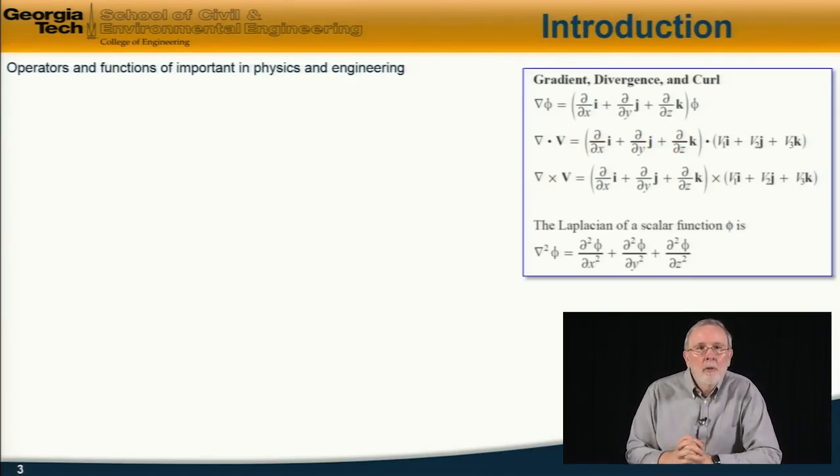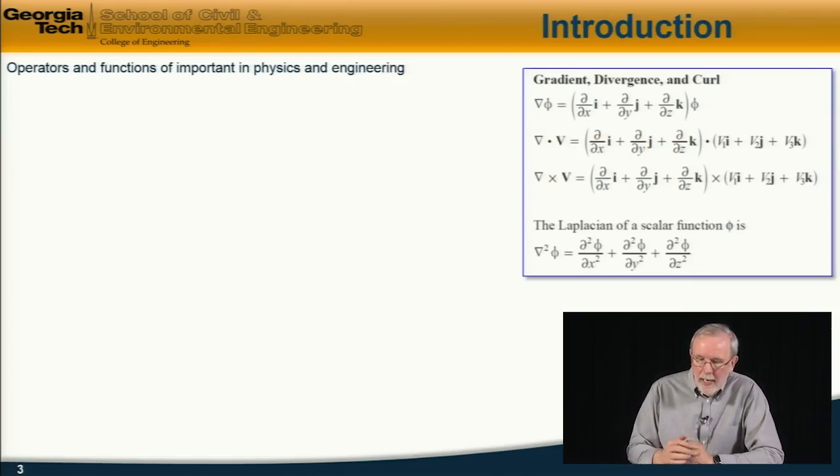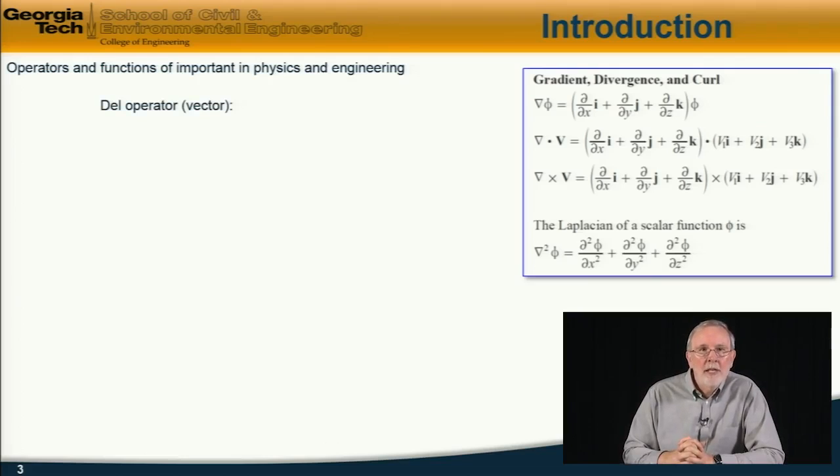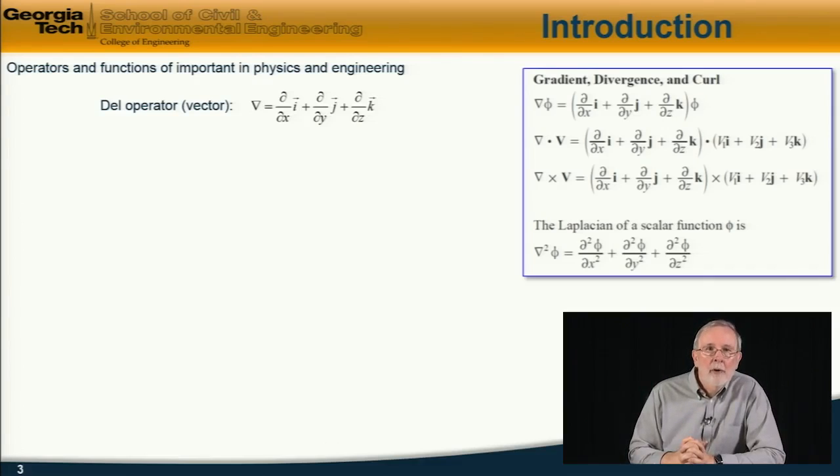So first of all, we have operators and functions that are of considerable importance in physics and engineering. And the definitions are given in this extract on the right-hand side from the manual. And we start off with the del operator, which is a vector operator, which looks like an upside down triangle, is defined in this way. Partial d by dx i plus d by dy j plus d by dz k in general is the del operator.